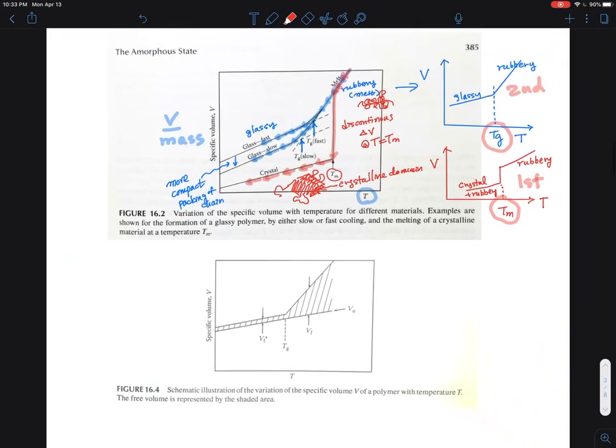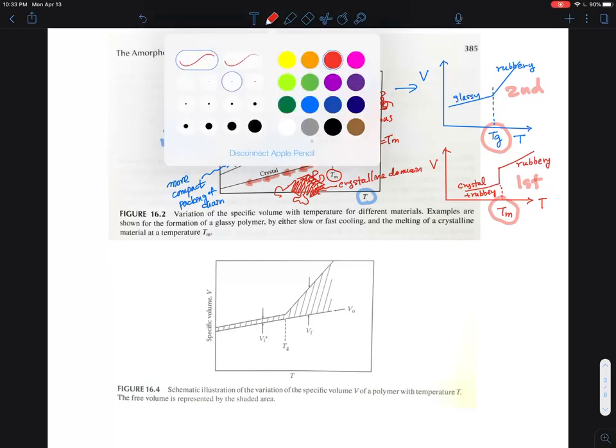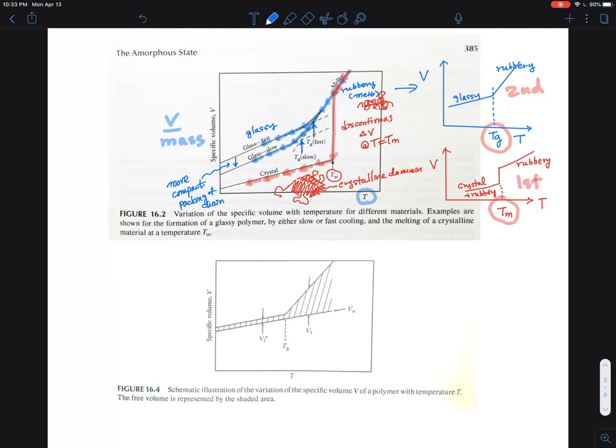A better picture is shown in the textbook. This is essentially what we observe experimentally, shown in the upper right corner of the specific volume versus temperature. This is glassy, this is rubbery. And what people have developed is the concept of intrinsic volume.